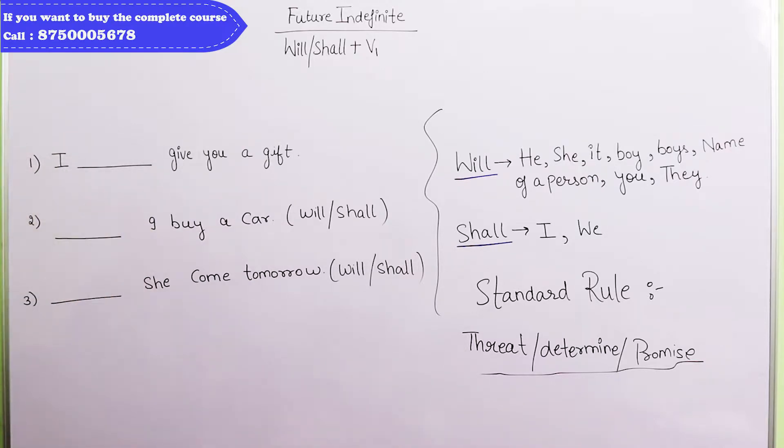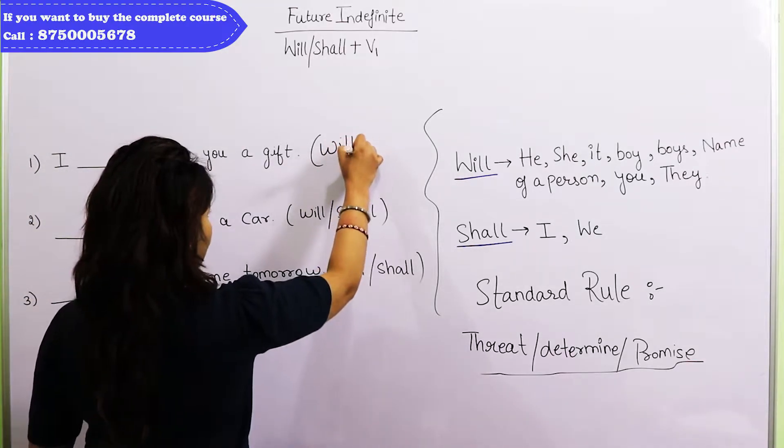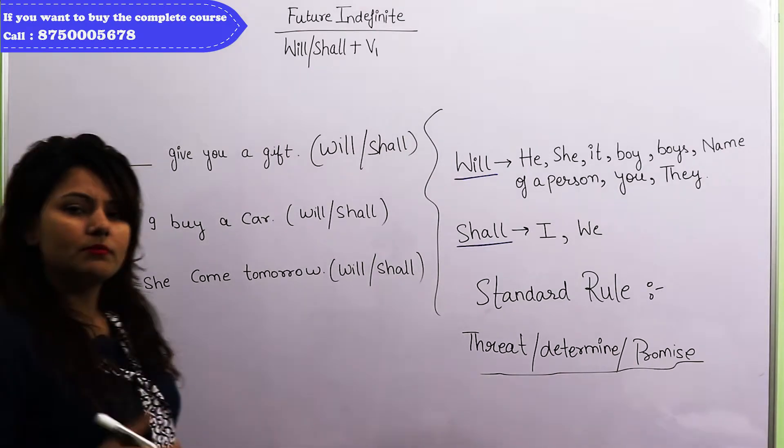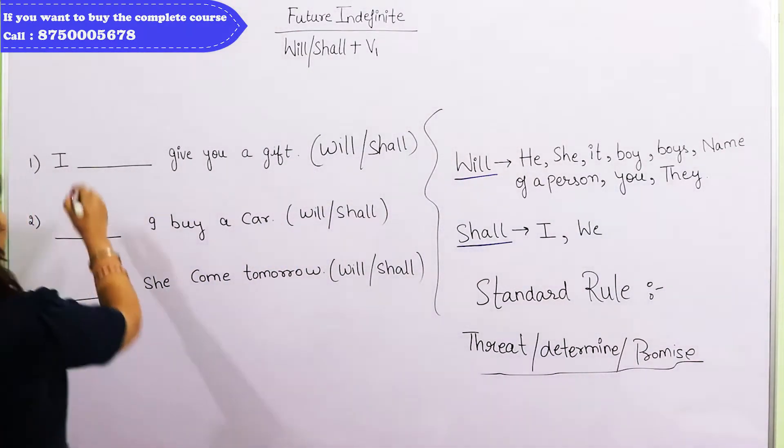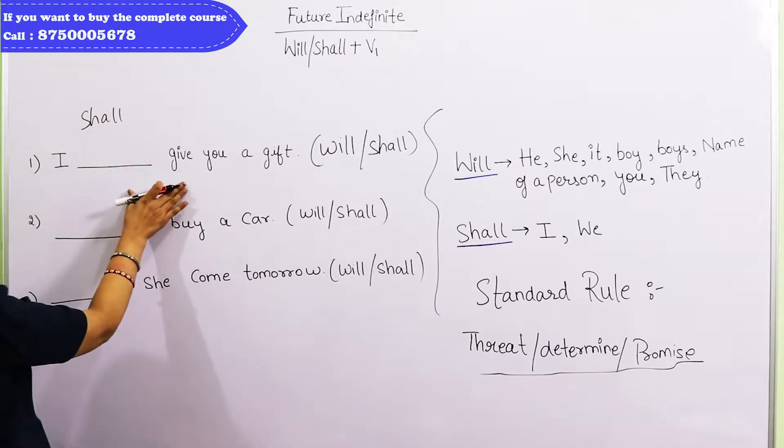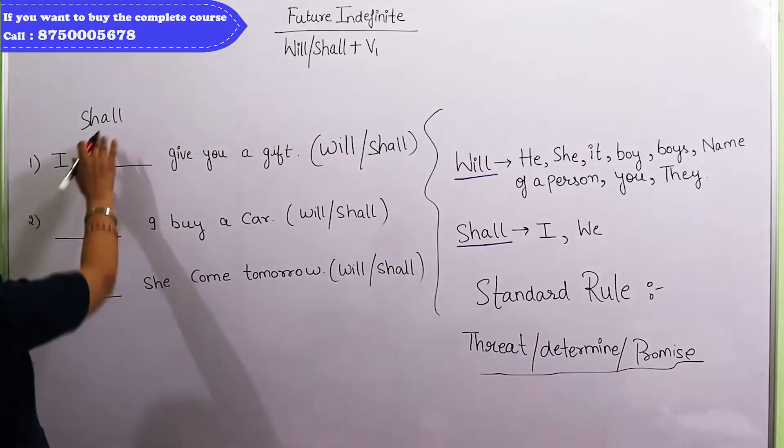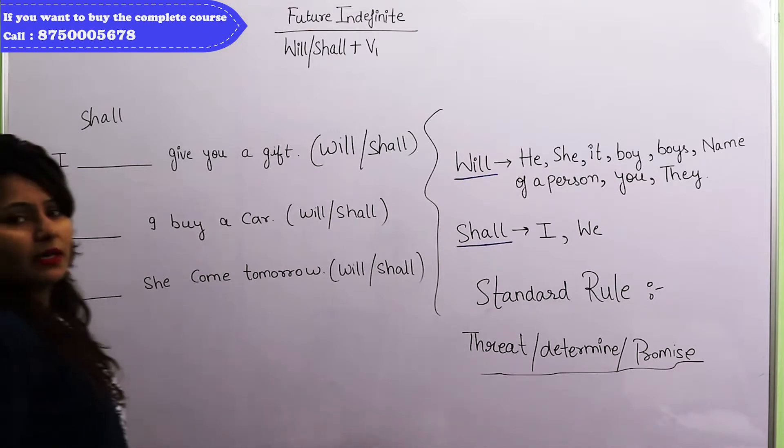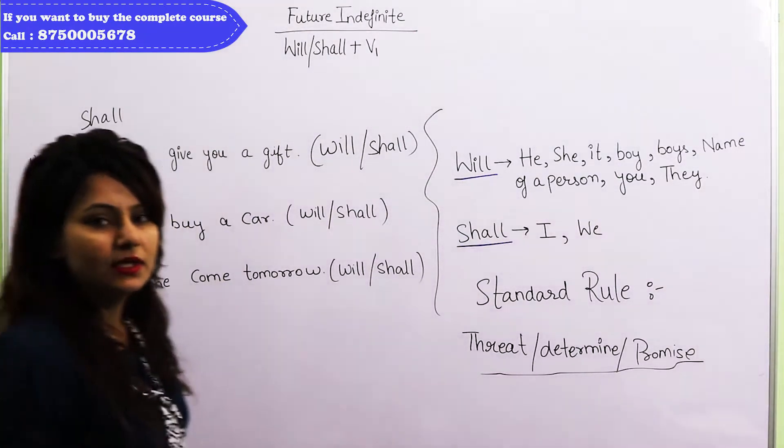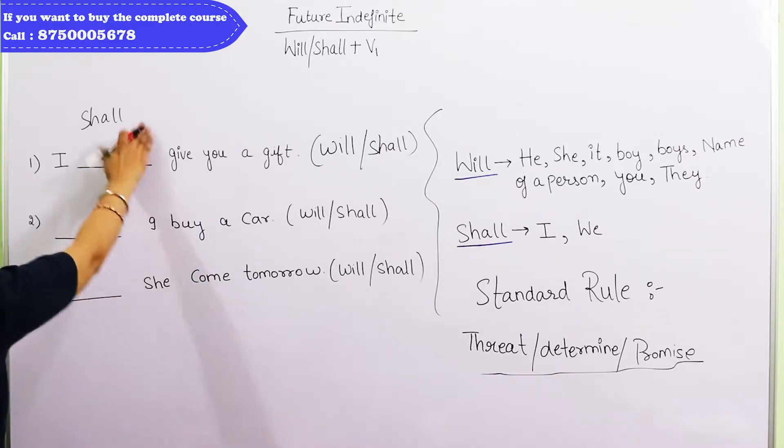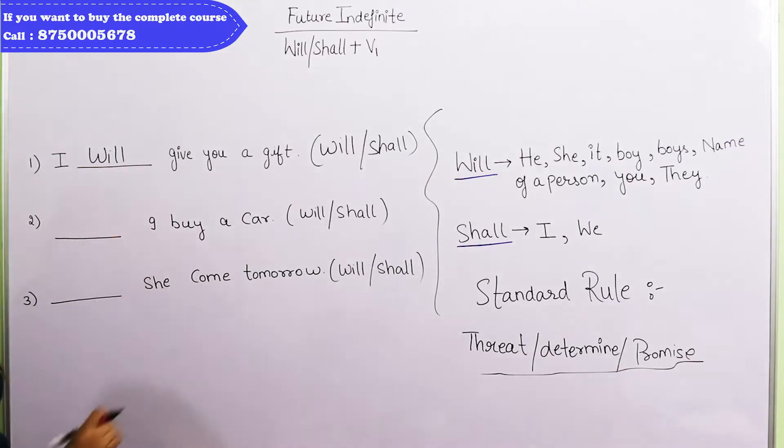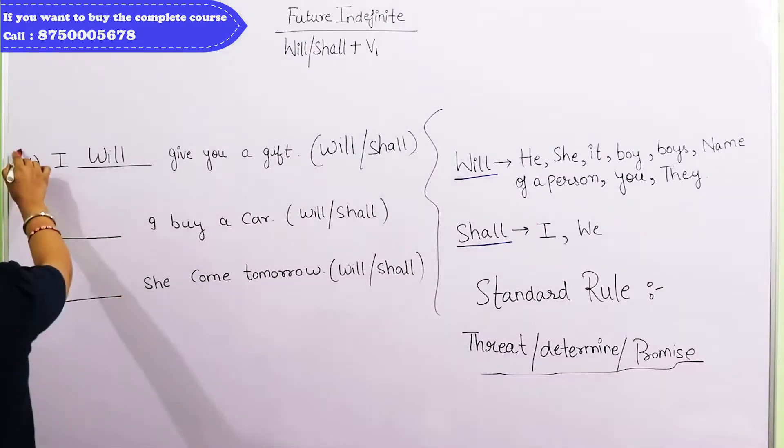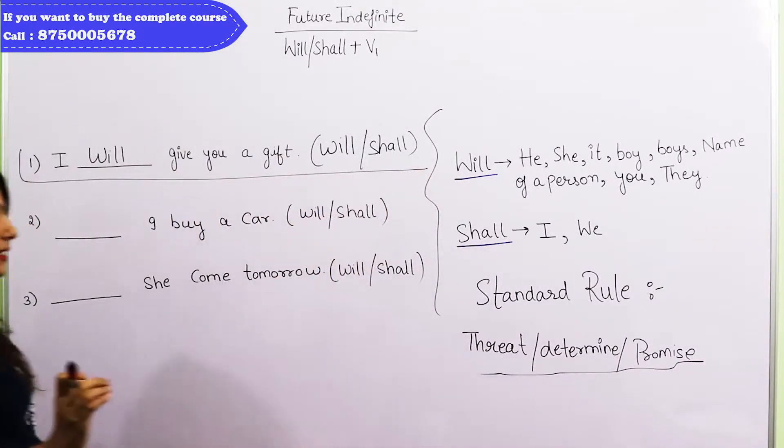As I have written sentence number one, I dash give you a gift. What do we want to put in this? Normally, what do we want to put with our rule? We want to put shall with our rule. If I write shall in this sentence, it means that it has a promise. That I will give you a gift or not. But if I put will here, it means that I will give you a gift. I will give you a gift.